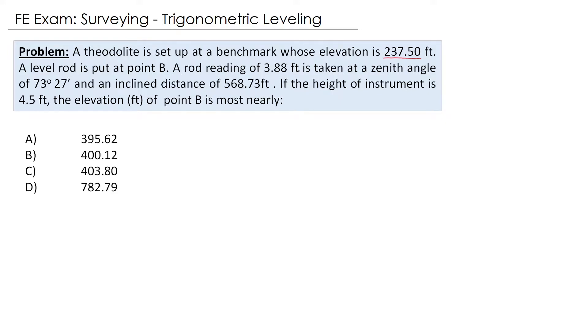A rod reading of 3.88 foot is taken at a zenith angle of 73 degrees 27 minutes and an incline distance of 568.73 foot. If the height of the instrument is 4.5 foot, the elevation in foot of point B is most nearly.